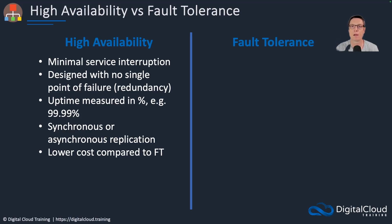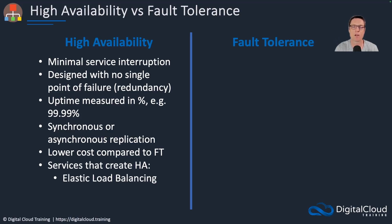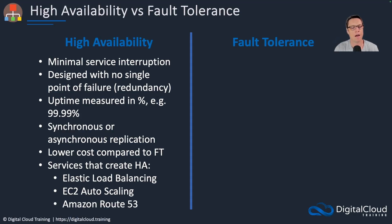With high availability, it's typically a lower cost compared to fault tolerance. In terms of services we can use, we've got Elastic Load Balancing for distributing incoming connections to different targets, and we can spread those targets across multiple availability zones. We've got Auto Scaling, which makes sure there are enough targets available and replaces any that fail. And then we've got Route 53, which is a DNS service that can respond to queries in a load balancing way or in a failover manner for disaster recovery.